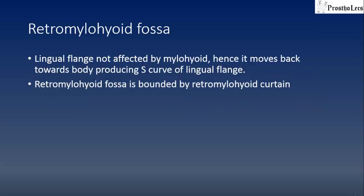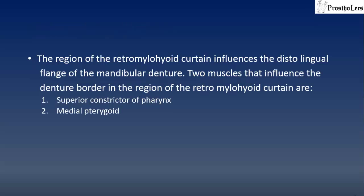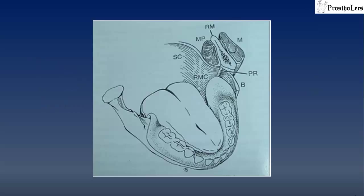The retromylohyoid fossa: the lingual flange in this area is not affected by the mylohyoid muscle, so it moves back towards the body, producing an S-curve of the lingual flange. The retromylohyoid fossa is bounded by the retromylohyoid curtain. The two muscles that influence the denture border in this region are the superior constrictor of the pharynx and the medial pterygoid. When the medial pterygoid is in action it produces a bulge in the superior constrictor muscle, which in turn affects the posterior border of the denture in this area.